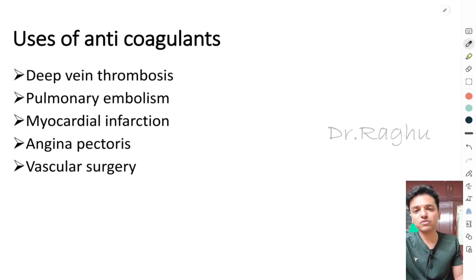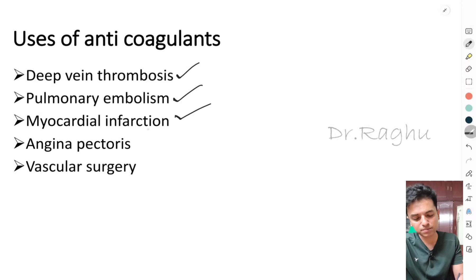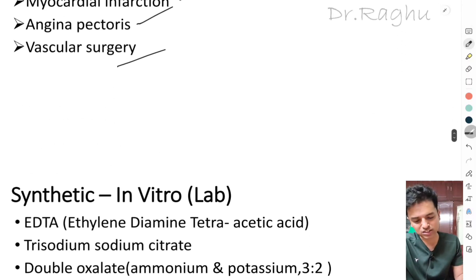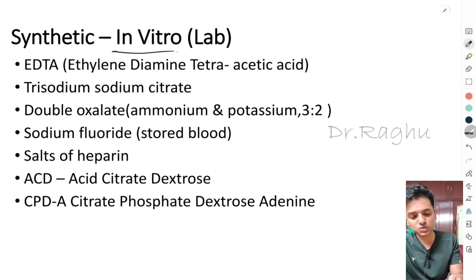If asked as a short note, it is good to mention clinical uses of anticoagulants. They are used in conditions such as deep vein thrombosis (DVT), pulmonary embolism, myocardial infarction, angina pectoris, and prior to, during, and after vascular surgeries.